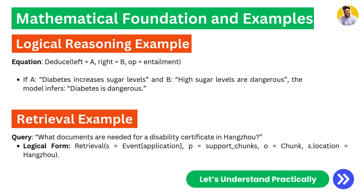We also have the mathematical foundations of logical reasoning. For example, if A is 'diabetes increases sugar levels' and B is 'high sugar levels are dangerous,' the system deduces that diabetes is dangerous. That's how logical reasoning works mathematically in CAG.